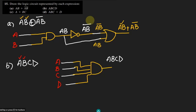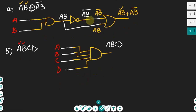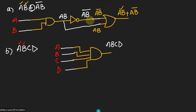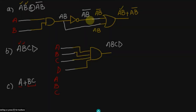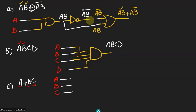Similarly, for part c we have a plus bc. We have three inputs a, b, c. First of all, I have to multiply them together and then I have to add the product of bc with a, the same as we have done previously. The first gate I will have here is the AND gate, and there we will have bc. At the end here we will get bc.